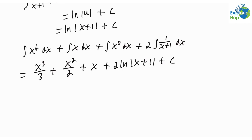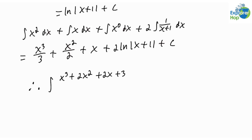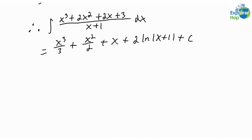And this gives us the antiderivative of our rational function. So therefore, the integral of x cubed plus 2x squared plus 2x plus 3 over x plus 1 is equal to x cubed over 3, plus x squared over 2, plus x, plus 2 times ln of the absolute value of x plus 1, plus some constant c. And that's it for this example. Thank you for joining us. See you in the next lesson.